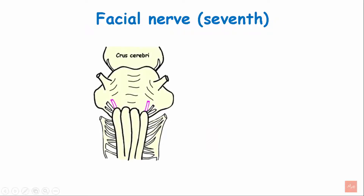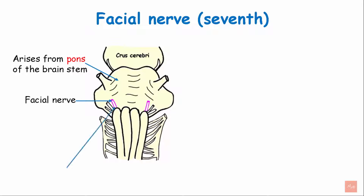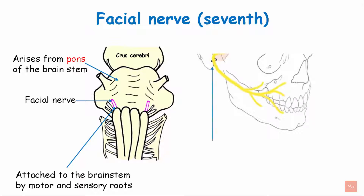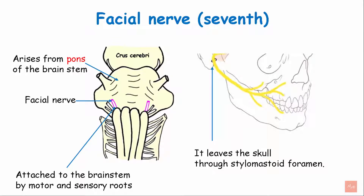The facial nerve is the seventh cranial nerve. It arises from the pons of the brain stem, and is attached to the brain stem by two roots: the motor and the sensory roots. It leaves the skull through the stylomastoid foramen.